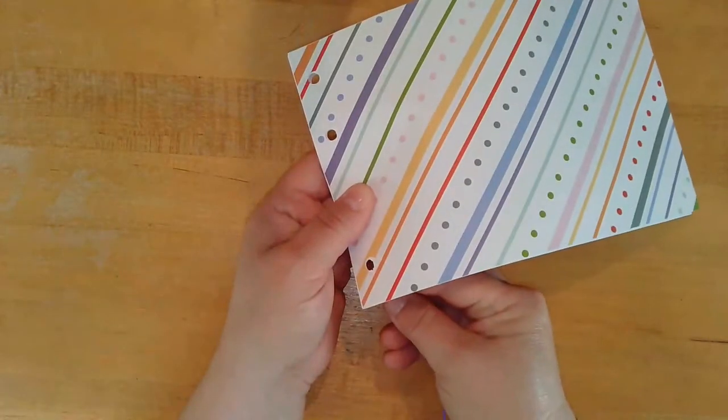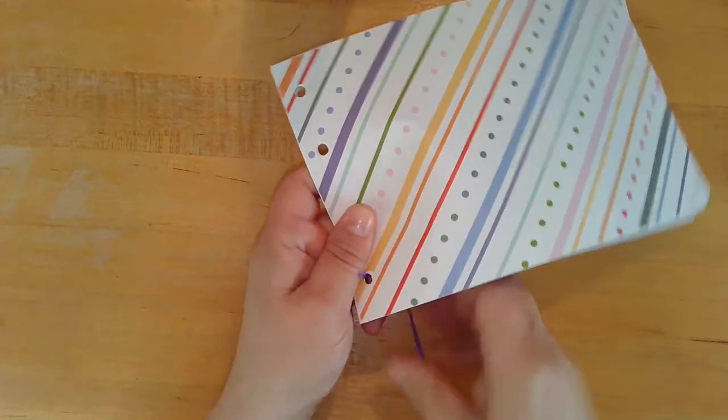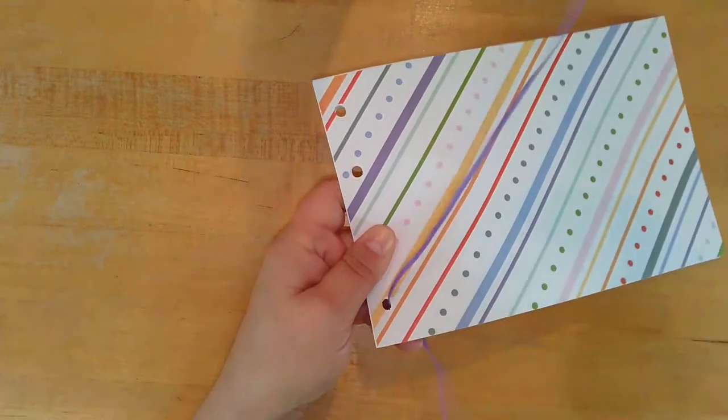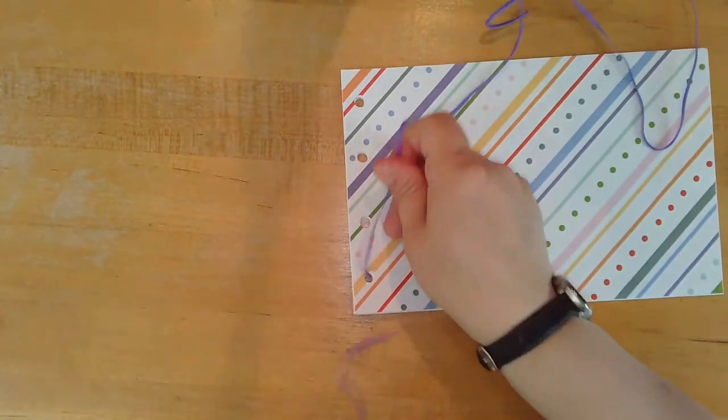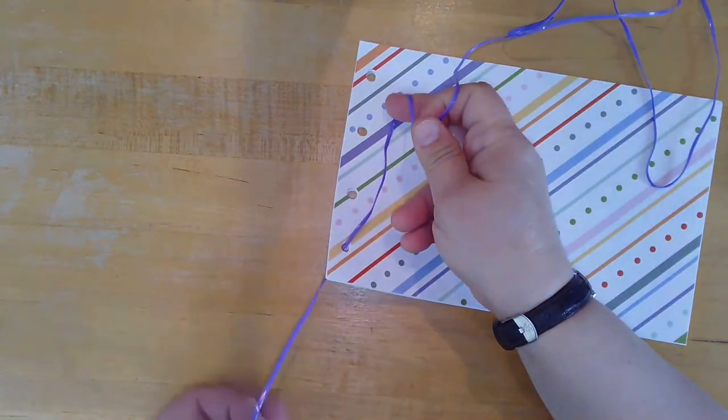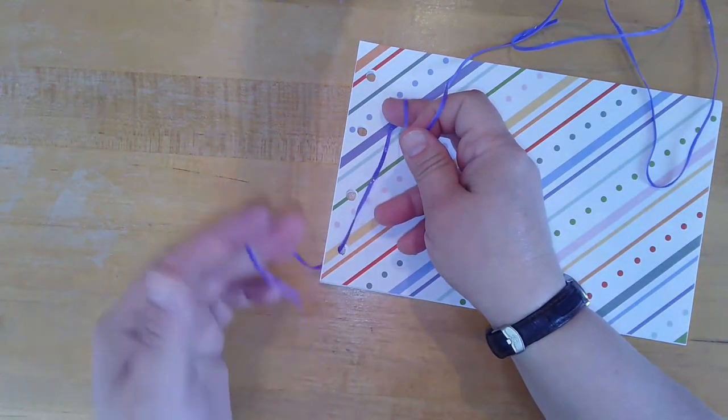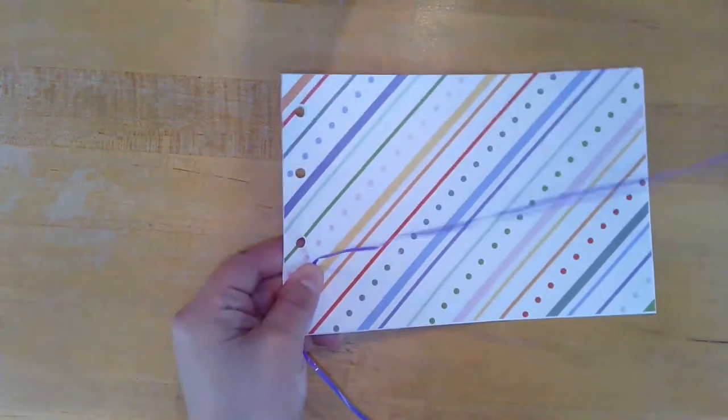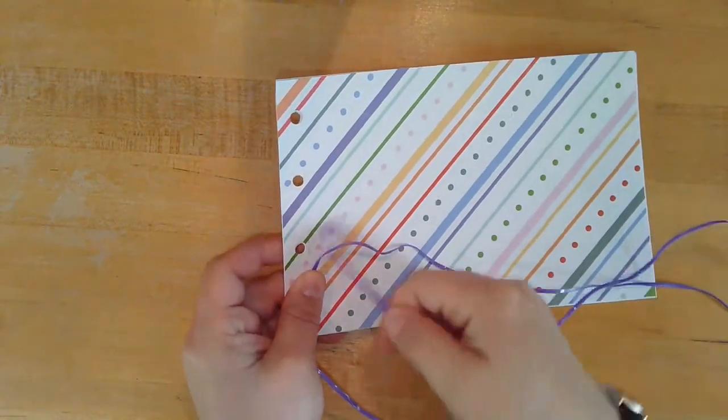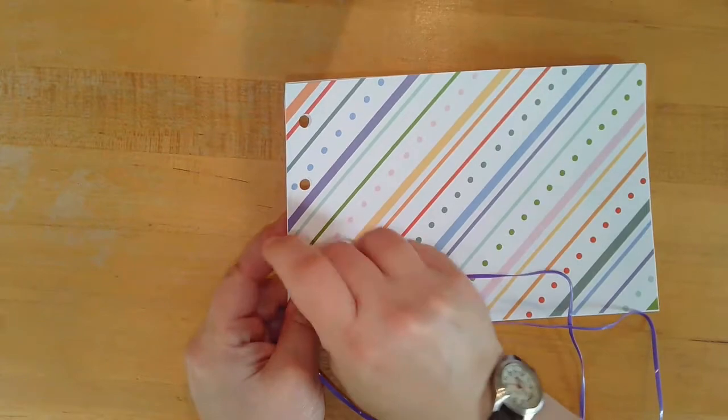To start, you're going to come through the back of the bottom hole. Bring it all the way through, leaving about four to five inches of string at the bottom. Now, making sure that it lays flat, you're going to go up to the second from bottom hole and come through the front and pull the string out through the back.